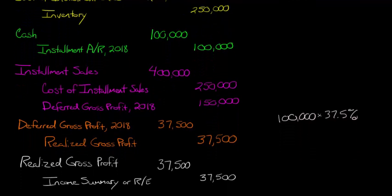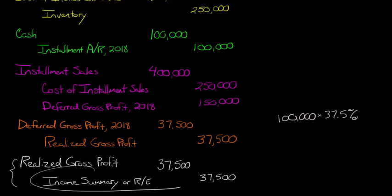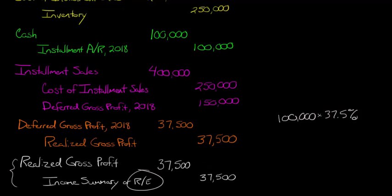This is also just a closing entry — it's mechanical. We debit the realized gross profit for $37,500 and credit it to income summary or retained earnings. Either way, we get rid of that $37,500 and it ultimately ends up in retained earnings on the balance sheet.